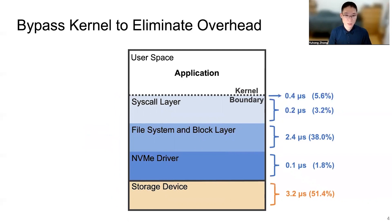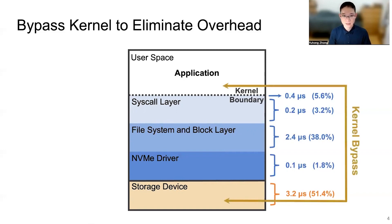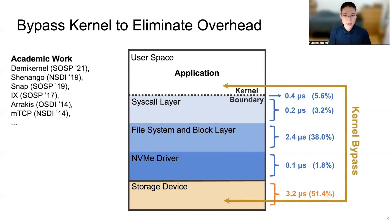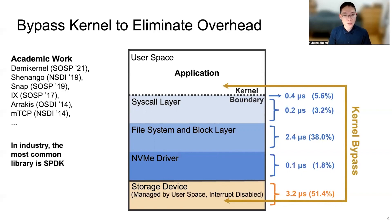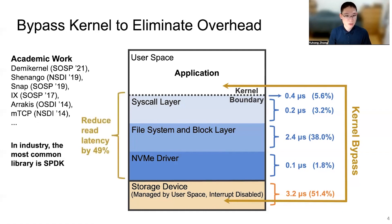Now we know the composition of the kernel software overhead, but the question is how to eliminate this overhead. One extreme way is to bypass the kernel entirely. Kernel bypass is a popular topic in academia. There are many exciting works such as DemiKernel, Shenango, and Snap, which build kernel bypass systems for storage or network applications. In industry, the most common library for storage kernel bypass is SPDK. Kernel bypass configures the storage device to be managed by user space and disables interrupts. The user space application can then communicate with the storage device directly without using any syscall. By eliminating all kernel software overhead, read latency can be reduced by up to 49%.